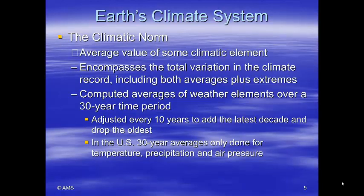When we talk about the climatic norm, we're talking about the average value of some climatic element, and it encompasses the total variation in the climate record — including both averages plus extremes, such as maximum and minimum temperatures. The computed averages of the weather elements are averaged over a 30-year time period and adjusted every 10 years, adding the latest decade and dropping the oldest. In the United States, 30-year averages are done for temperature, precipitation, and air pressure.